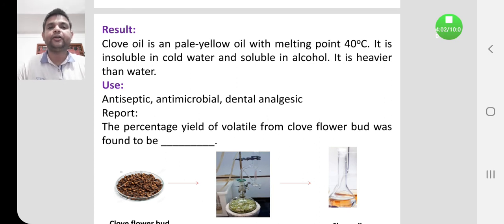Overall, what we have learned from this experiment is that clove oil is extracted from the clove flower bud by using an apparatus called the Clevenger apparatus. The principle involved here is the hydro steam distillation method.